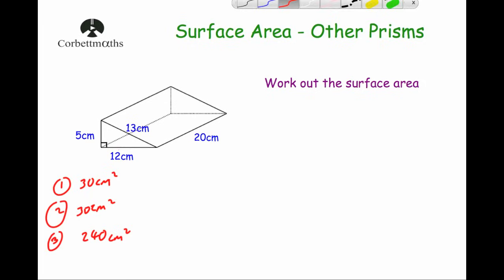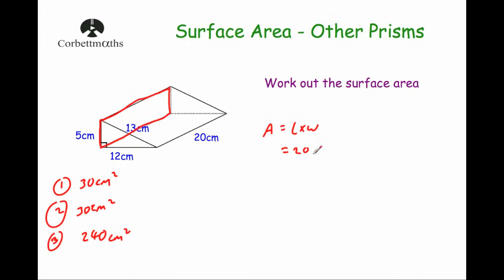Now we're going to do the vertical rectangle on the left-hand side. That rectangle has a length of 20 and a width of 5. Area equals length times width, which is 20 times 5, equal to 100 centimeters squared. So face number four, the vertical one, is 100 cm².